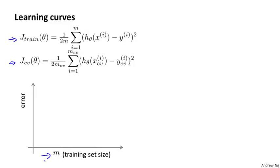M is usually a constant — maybe I just have 100 training examples. But what I'm going to do is artificially reduce my training set size. So I'll deliberately limit myself to using only, say, 10, 20, 30, or 40 training examples and plot what the training error is and what the cross-validation error is for these smaller training set sizes.